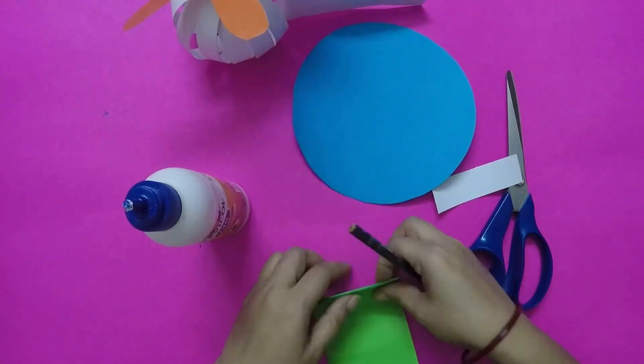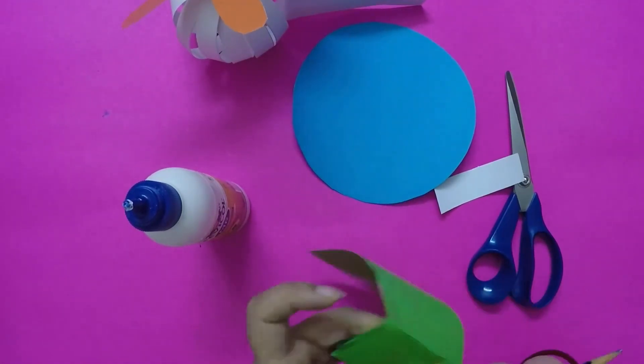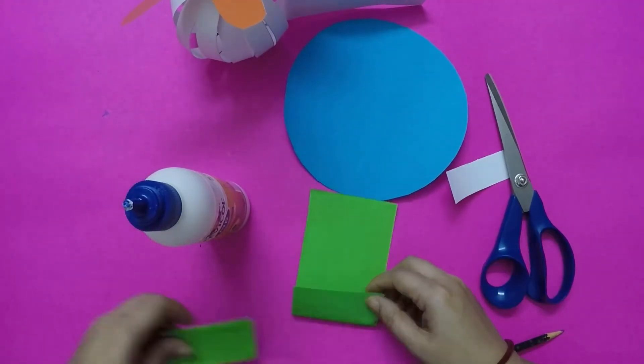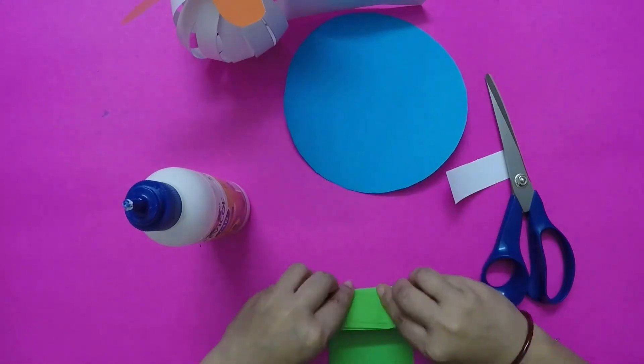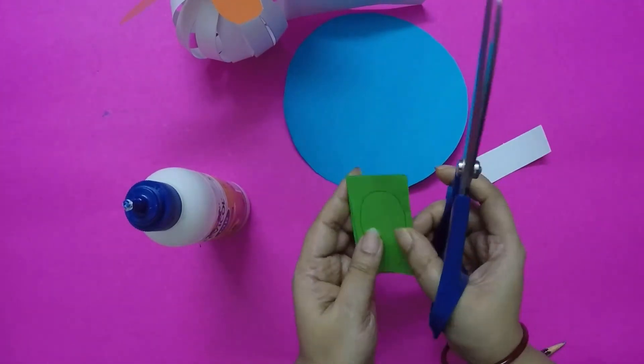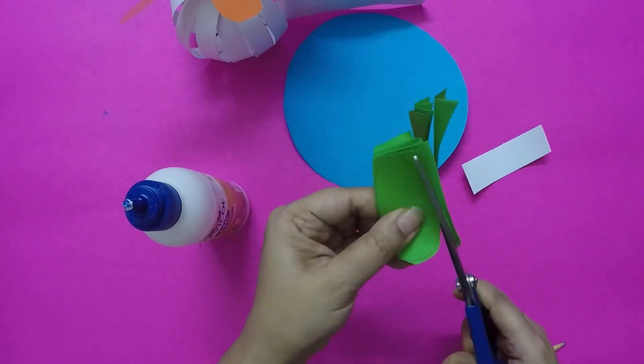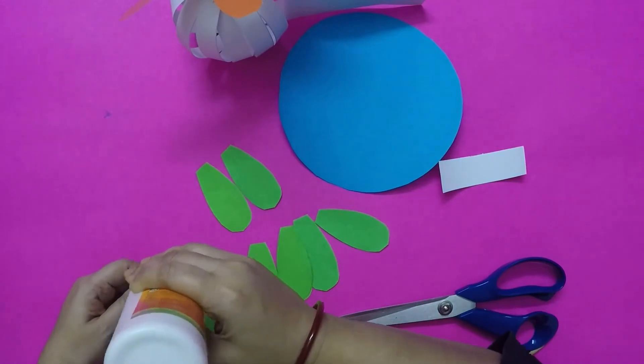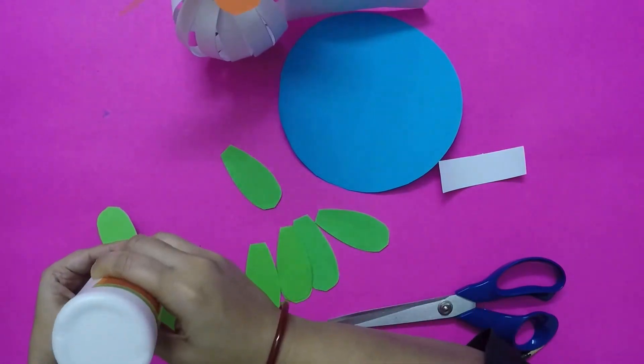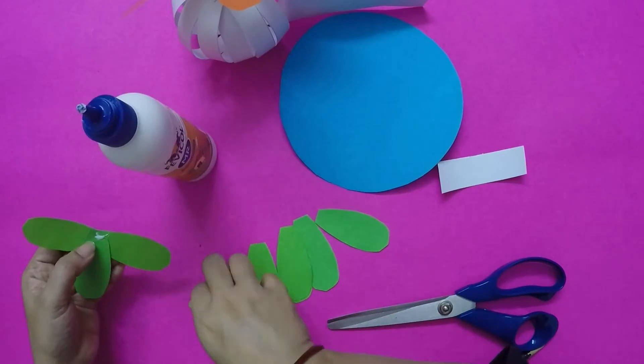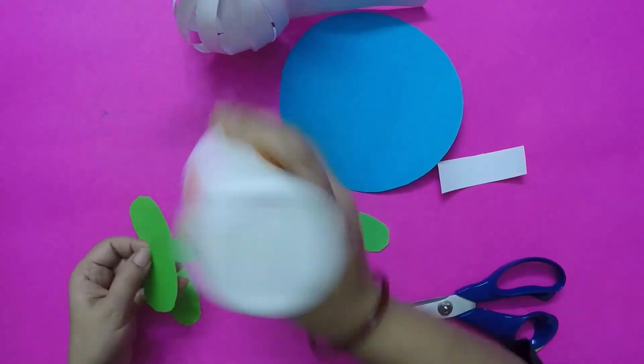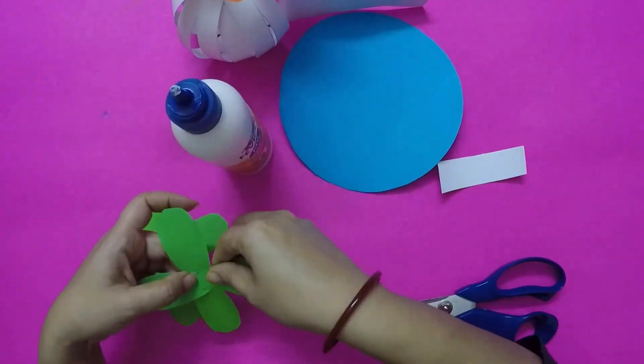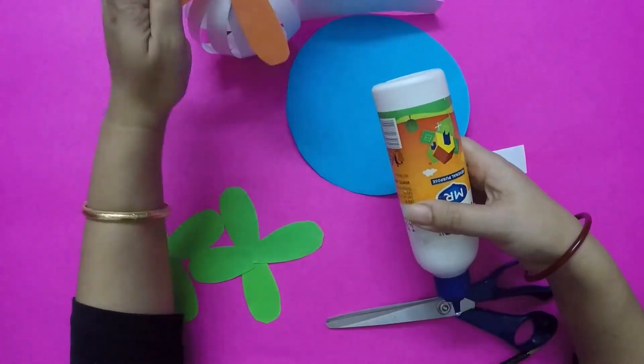Next take green paper to make the blades of the tail portion like this. Paste the blades.